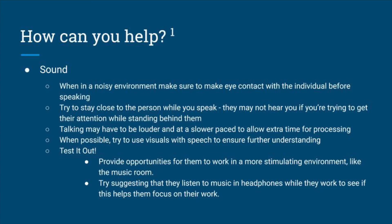For individuals with low registration in sound, it is helpful to incorporate the following guidelines. These individuals have a more difficult time taking in and processing sound stimulation, which can make conversations and learning harder. Some ways you can help are to make direct eye contact while speaking, which will help clue them in that you're speaking to them and that they should focus. It may also be helpful to be near the individual when speaking, speak louder and at a slower pace, and if necessary use visuals to help them understand. If you aren't quite sure if the individual has low sound registration, some things you can do to test this are to provide increased opportunities for them to work in louder, more stimulating environments such as the music room, or suggest that they listen to music through headphones while they work.